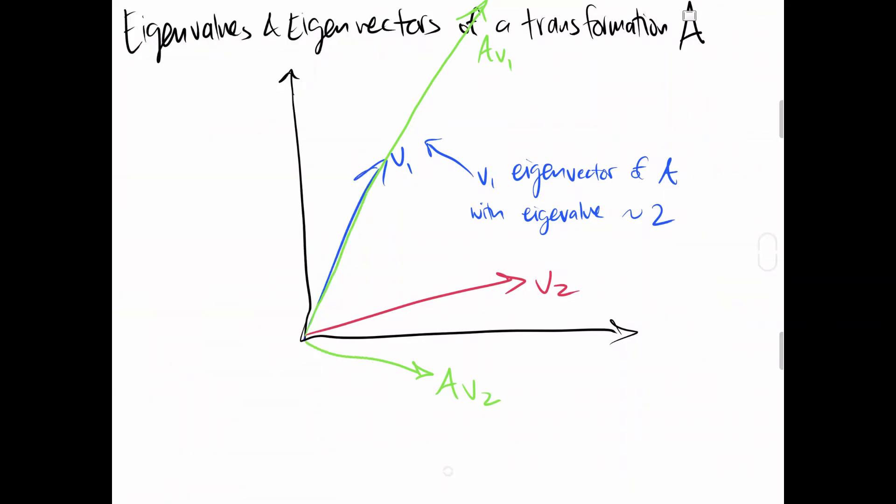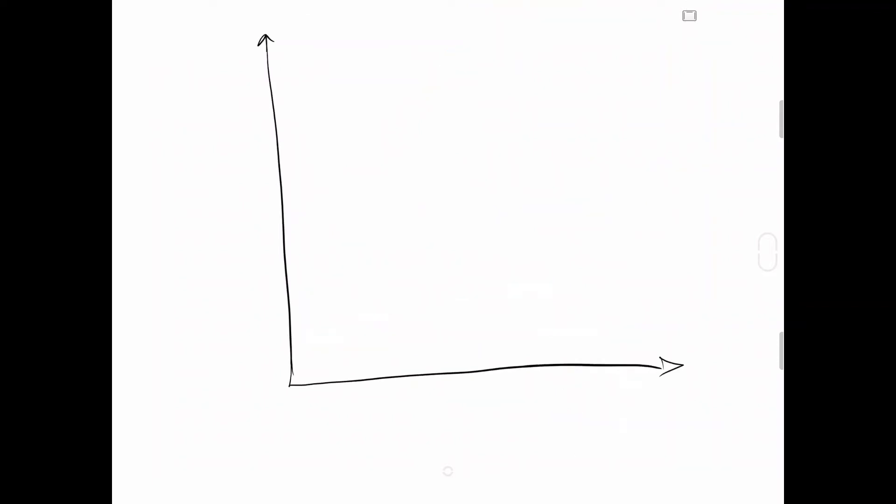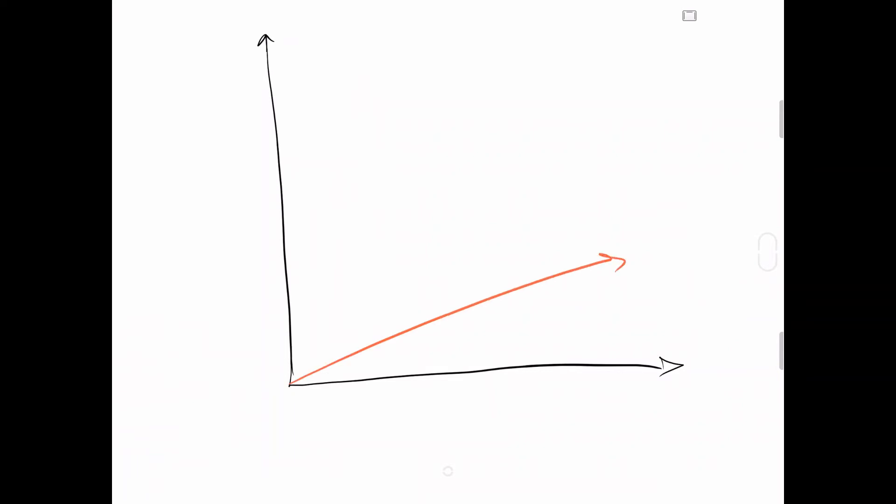On the other hand, vector 2 is not an eigenvector. This is because after applying A to vector 2, AV2 is not on the same span as vector 2.